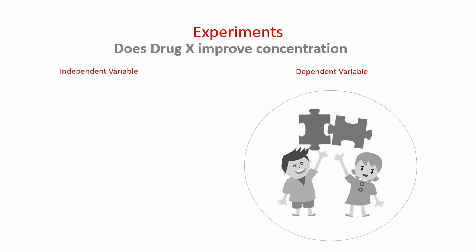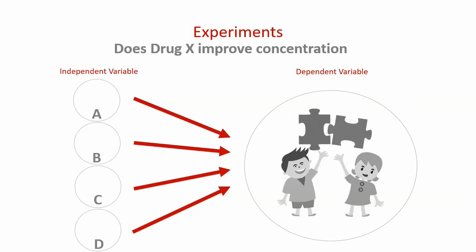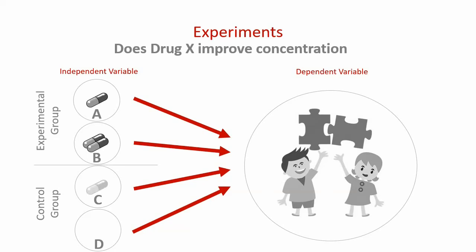The independent variable will be the drug. Since the independent variable is the thing you are manipulating, you can create different scenarios involving the drug. You may create multiple groups — in a classic experiment, an experimental group and a control group. Random assignment minimizes other factors influencing results. In the experimental group, group A gets half a dose and group B gets a standard dose. In the control group, group C gets a placebo and group D gets no drug at all, so we can compare results and determine if the drug actually made a difference. At the end you document the results, perform analysis, and make an inference based on the data.